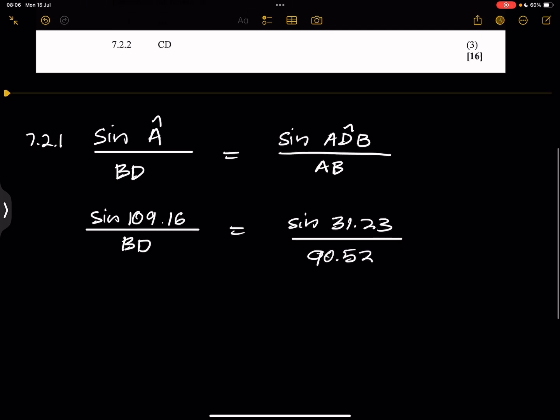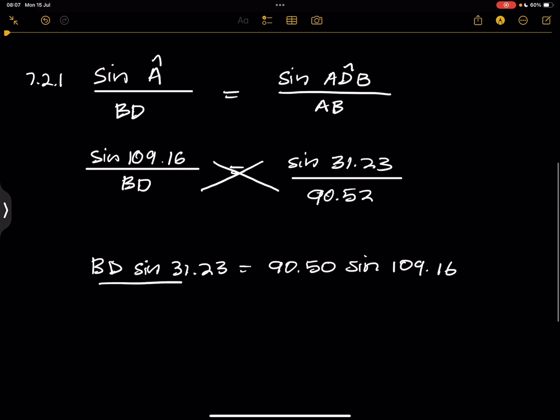So all we're going to do is cross multiply. So this is going to be BD multiplied by the sine of 31.23 is equal to 90.52 times the sine of 109.16. Now, I think it's better to actually just try and work it out as much as possible before you punch everything into the calculator.